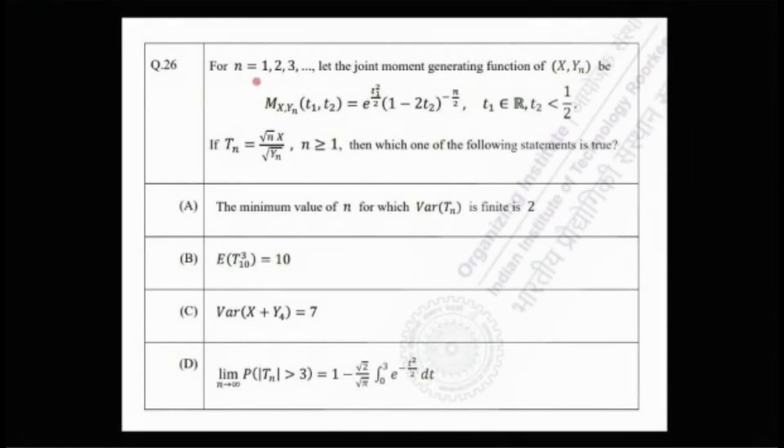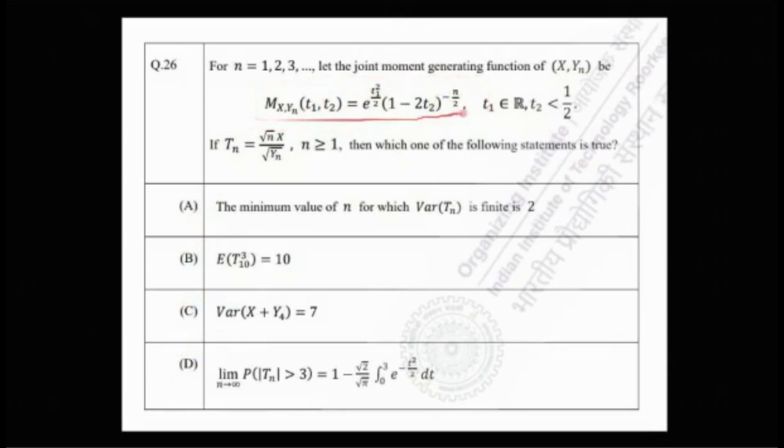The problem says that for n = 1, 2, 3, ... let the joint moment generating function of X and Yn be e^(t1²/2) · (1 − 2t2)^(−n/2), where t1 is a real number and t2 < 1/2. If Tn = √n · X / √Yn for n ≥ 1, then which one of the following statements is true? There is a sequence of random variables Y1, Y2, Y3, ... and the joint MGF of X and Yn is given.